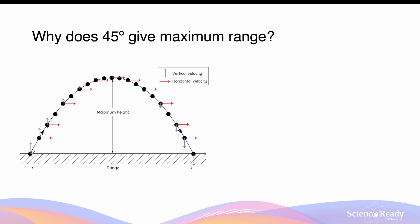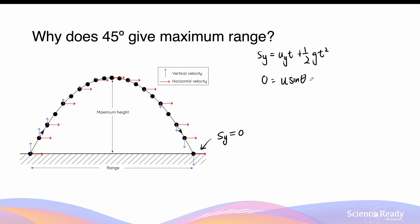Suppose we have an object that undergoes a full-flight projectile motion, meaning it finishes the motion at the same vertical displacement as where it was launched. Thus, the value of Sy at the end of the motion is zero. Using the equation discussed earlier, the initial vertical component can be written as u·sinθ, where u is the initial resultant velocity, giving: 0 = u·sinθ·t + ½g·t².